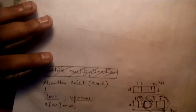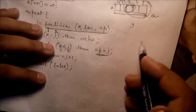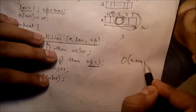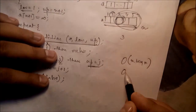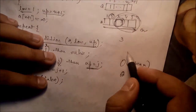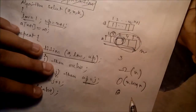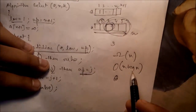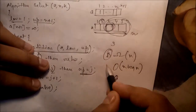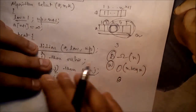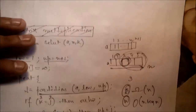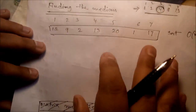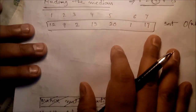The worst-case complexity of this median search is O(n log n). The best case is O(n) — you get the median value on the very first partition pass. The worst case occurs when you must search through the data one element at a time.